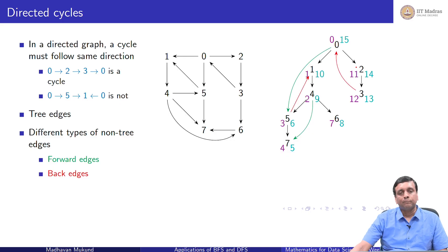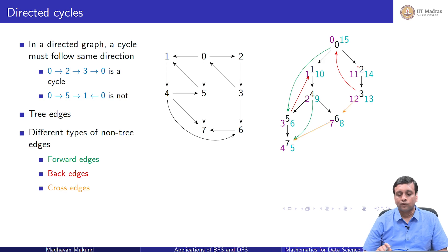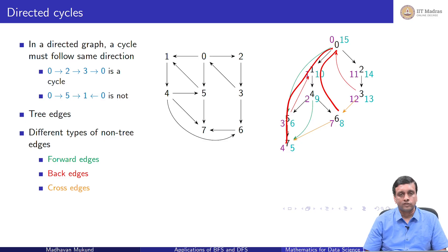A backward edge goes up a path in the tree — from a lower node to a higher node along an existing path. For example, going from 5 back to 1 (where a path 1→4→5 exists), or from 3 back to 0 (where a path 0→2→3 exists). Finally, there are cross edges, which cut across different branches of the tree — for example, 6 to 7, where 6 is on one branch and 7 is on another. So the three types of non-tree edges in a directed graph are forward edges, back edges, and cross edges.